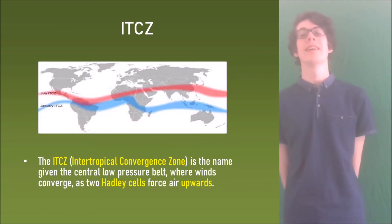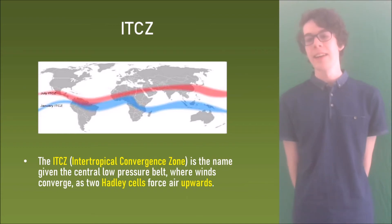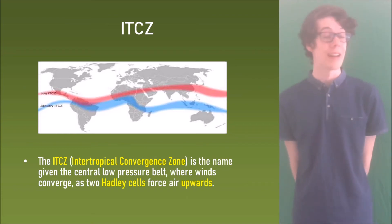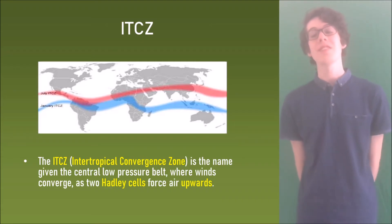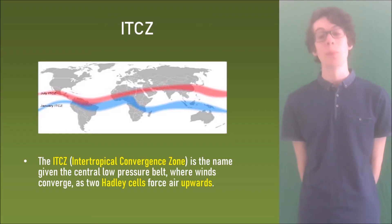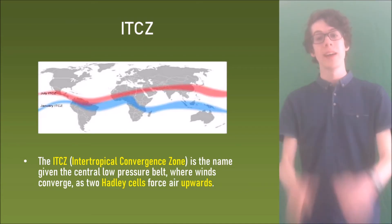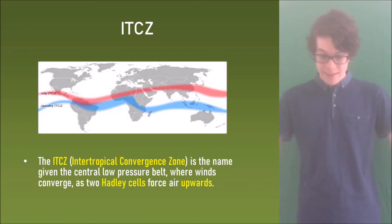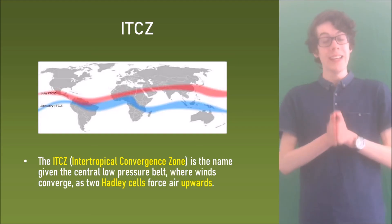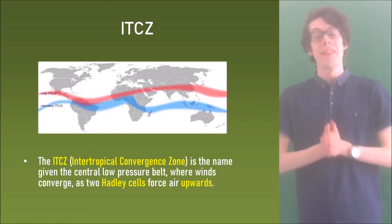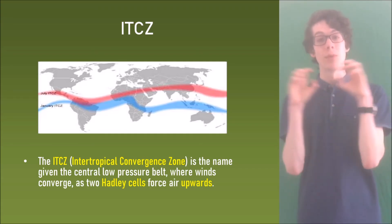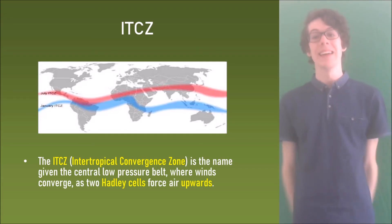The next part is the ITCZ. You just need to know what it stands for and what it actually is. The ITCZ stands for the Intertropical Convergence Zone, and it is the name given to the central low pressure belt where winds converge as two Hadley cells force air upwards. Because of the heat, you get precipitation and a lot of rain, which causes a wet band to form around the equator — around the ITCZ.